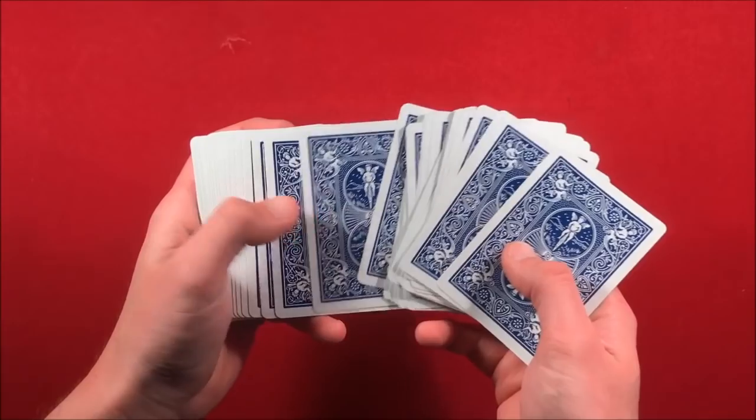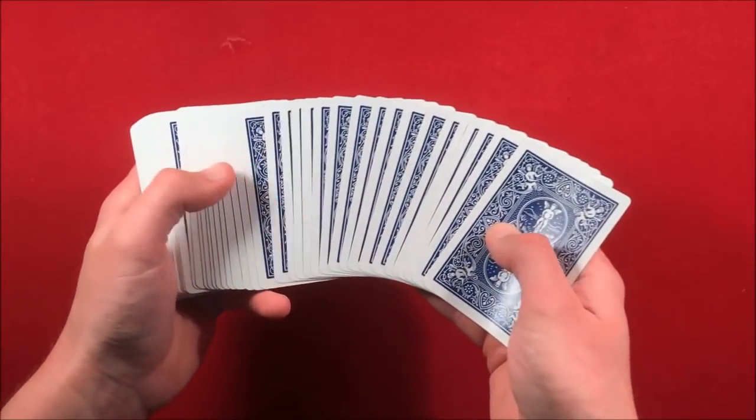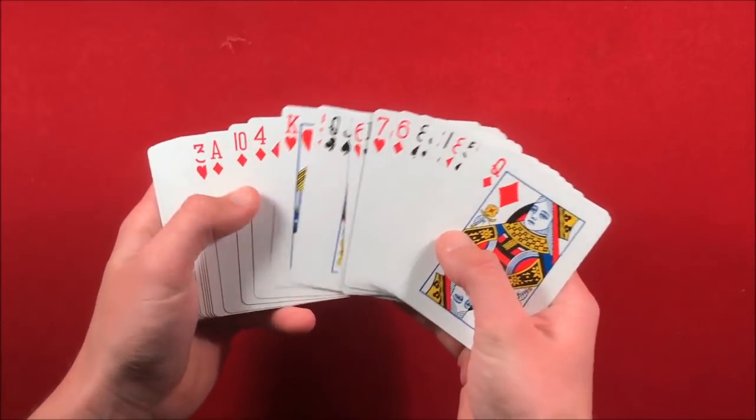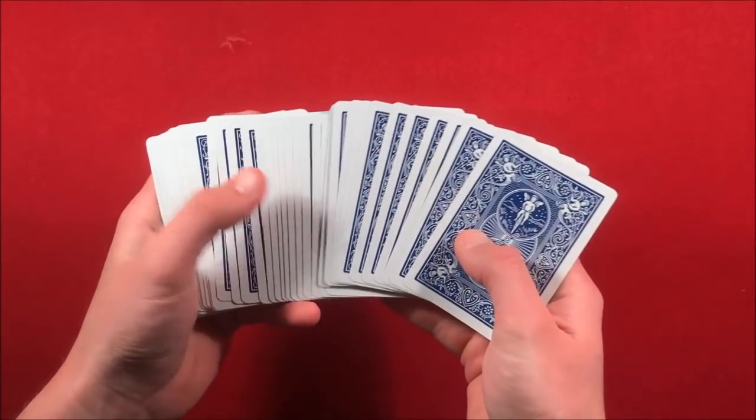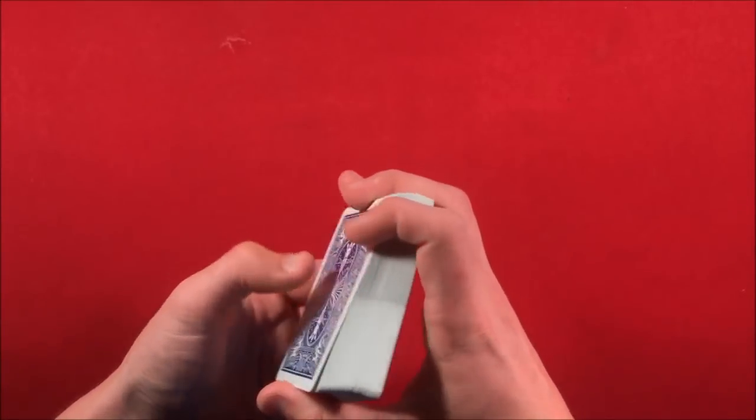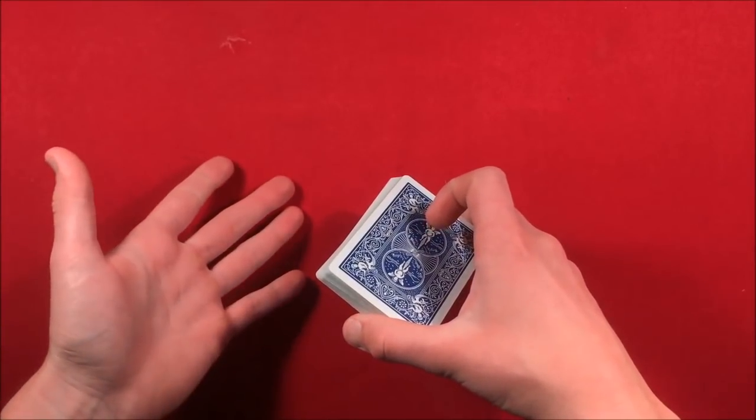From here I wouldn't recommend spreading open the deck so the spectators can see that it's really blue, only because if you're spreading through the cards and they notice that there isn't a red card here, at the end of the trick when they pick a card from the middle and they notice that when you were spreading through the cards at the beginning they didn't see a red card, it might seem a little fishy. So I don't really recommend doing that.